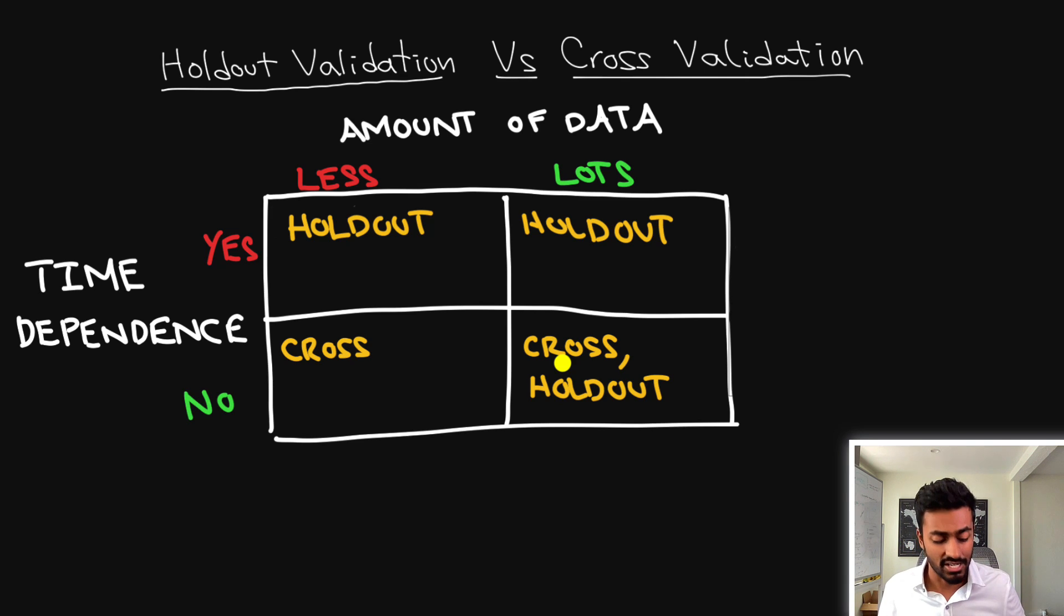But there are also other considerations to think about for example time dependence. This means that the data that you've collected is actually determined at very specific points of time. And if you have a time dependence in your data you can't really use cross validation in the form that we discussed because of the concerns of data leakage.